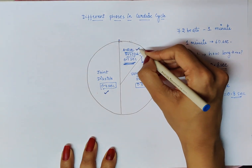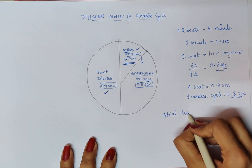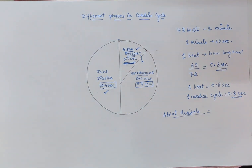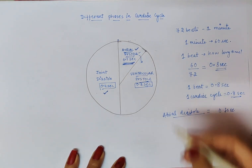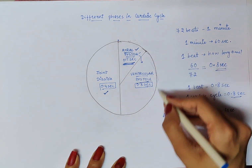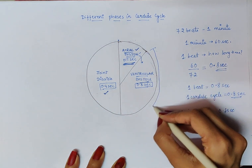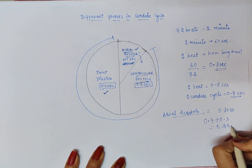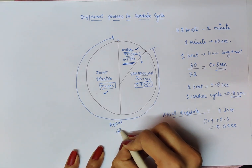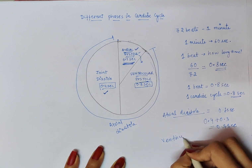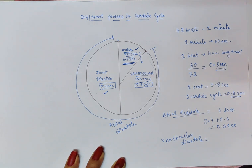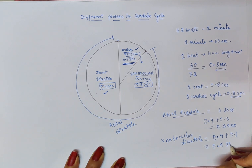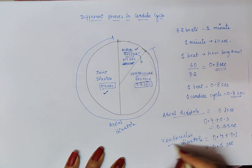So for how long does atrial diastole last? It is 0.7 seconds — because the atria were also in diastole during ventricular systole (0.3s), plus the joint diastole (0.4s), giving 0.3 + 0.4 = 0.7 seconds of atrial diastole. Ventricular diastole lasts 0.4 + 0.1 = 0.5 seconds.